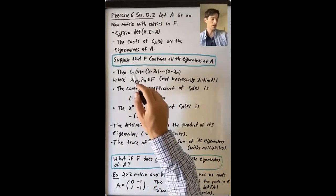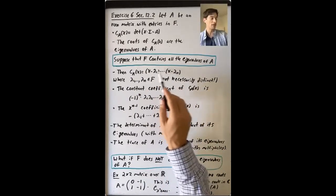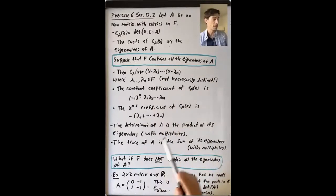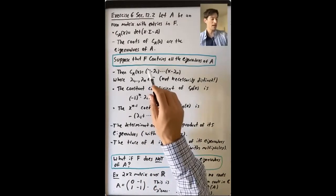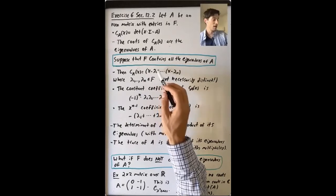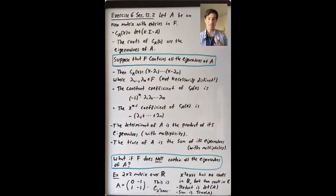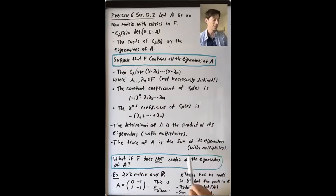The constant coefficient, which we know is (-1)^n times the determinant of A, we can also compute as the constant term of that product, giving (-1)^n times the product of lambda_1 through lambda_n. The X^{n-1} coefficient, which is minus the trace of A, equals minus the sum of lambda_1 through lambda_n. So the determinant of A is the product of its eigenvalues (with multiplicity), and the trace of A is the sum of its eigenvalues (with multiplicity). The minus ones floating around cancel out, making this statement true.